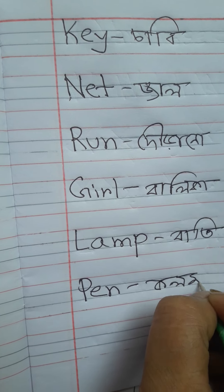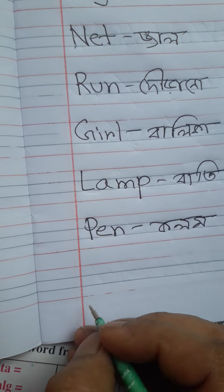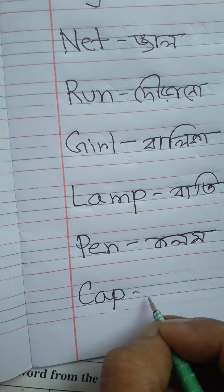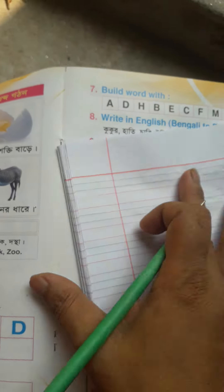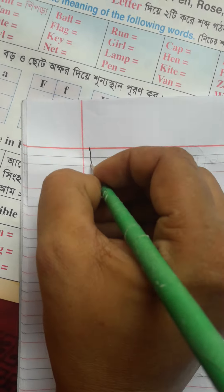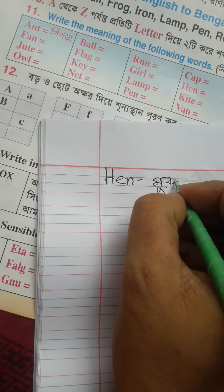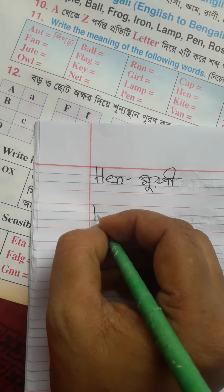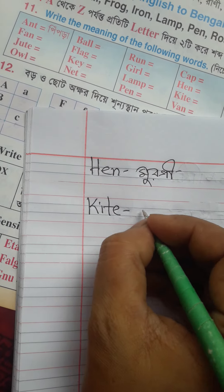Cap, C A P, cap, અર્થ ટોપી. Hen, H E N, hen, અર્થ મૂર્ગી. Kite, K I T E, kite, અર્થ ઘૂડી.